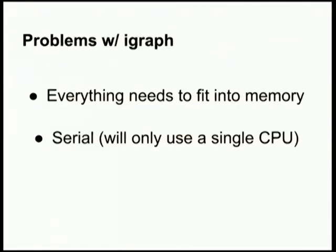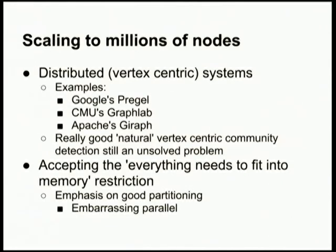The problem with iGraph is that everything needs to fit into memory. When you're talking about a massive internet-scale network, that's hard to do, and it's also serial — it only runs on a single processor. So how do we scale this? There are distributed systems: Google has one called Pregel, there was one created at Carnegie Mellon called GraphLab, and there's an Apache project for one. It turns out Hadoop is not good at large-scale graph analysis — the properties that make Hadoop good at MapReduce are not very good for large-scale graph analysis.